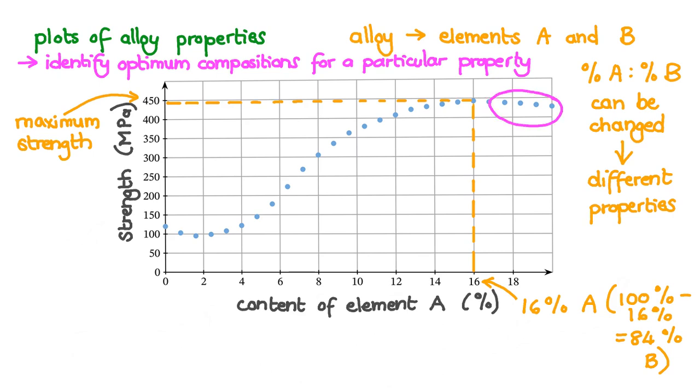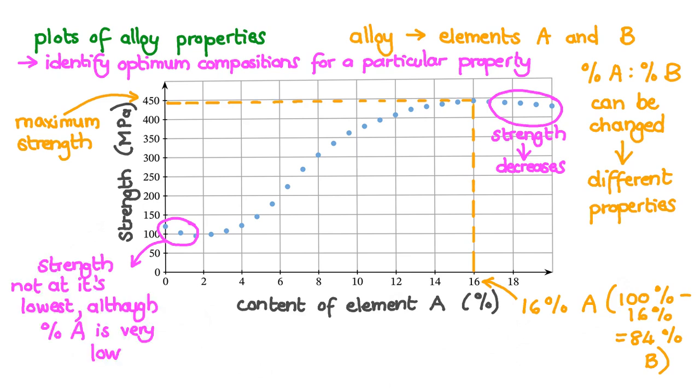Notice also that on this part of the curve, the strength actually begins to decrease with contents of A higher than about 16%. While in this part of the curve, when the content of element A in the alloy is less than 2%, the strength of the alloy is not at its lowest, although the percentage of A is very low. The lowest strength of the alloy occurs when the percentage of A is approximately 2%. At this point, the strength is about 100 MPa.